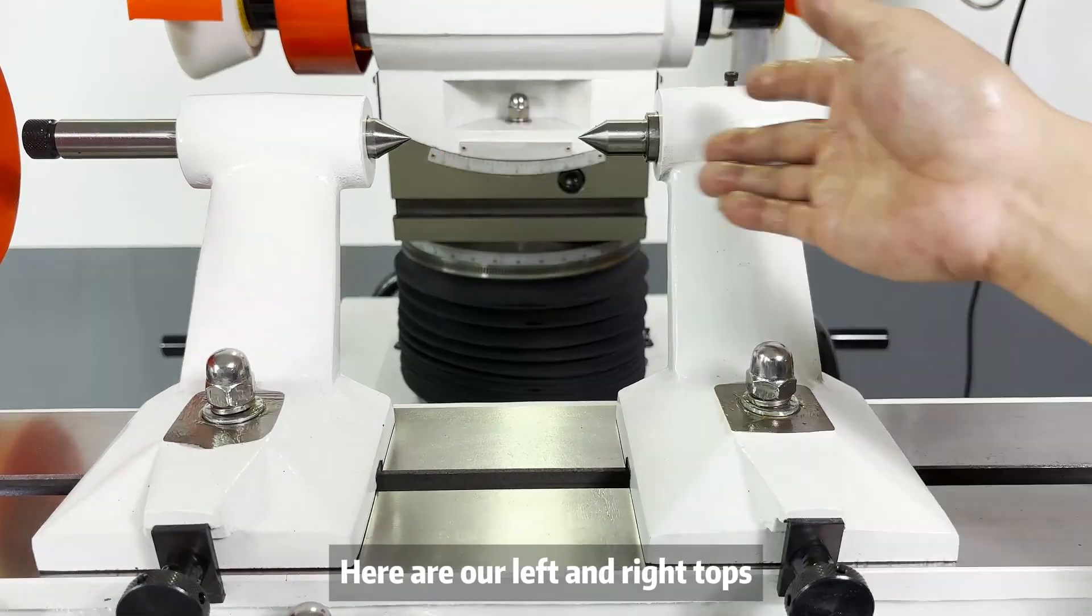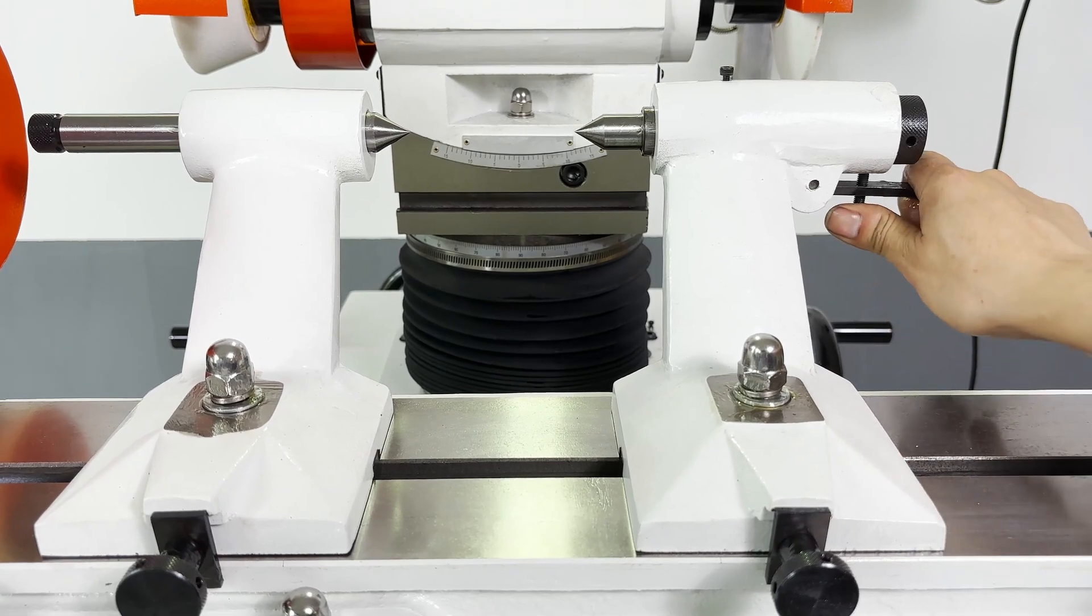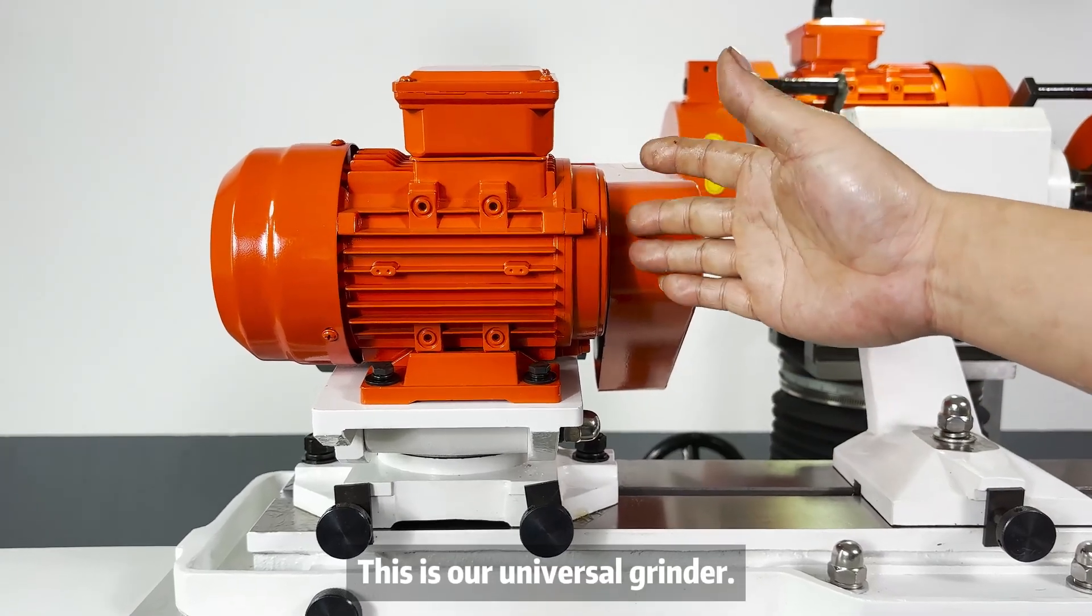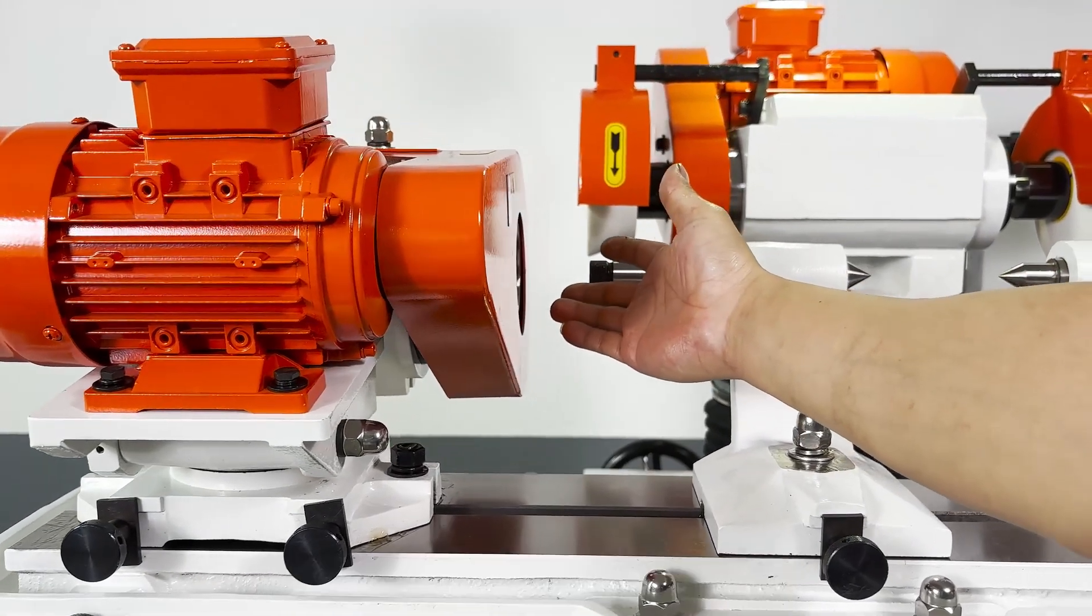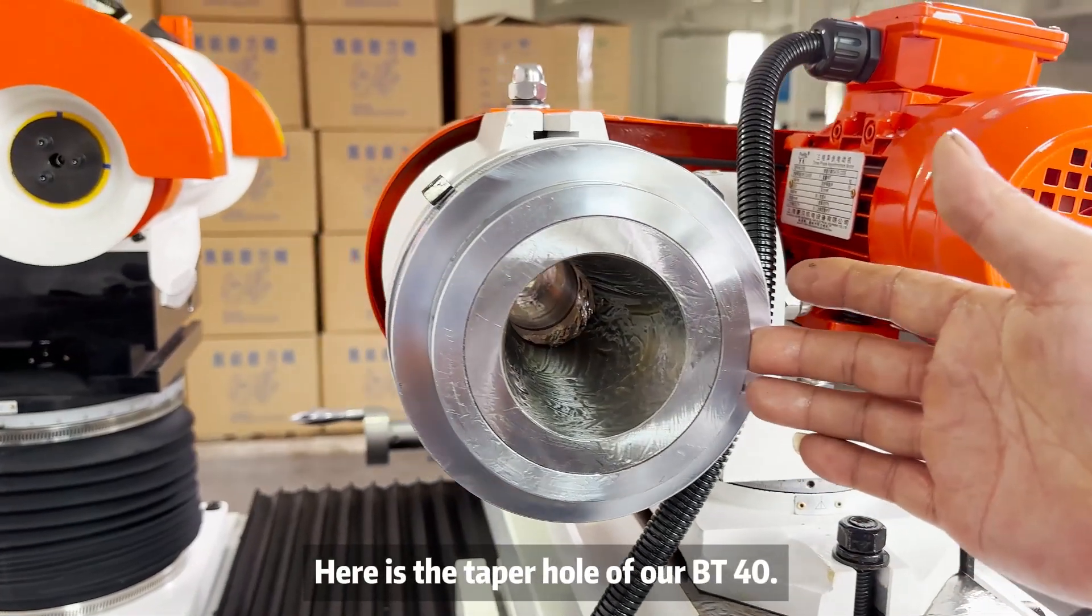Here are our left and right tops, used to bless bells and arrows. This is our universal grinder. This is the cone hole of our MT-5. Here is the taper hole of our BT-40.